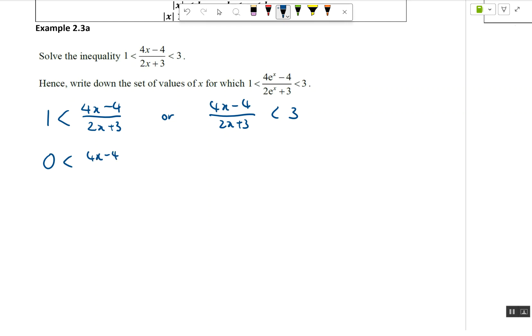(4x - 4) - (2x + 3) over (2x + 3). Make it nice, I will have (2x - 7) over (2x + 3). And when I multiply by (2x + 3) squared—if you do not know what I'm doing, please refer to the previous videos—I'm going to get these two points as well as 7/2.